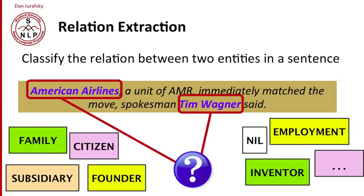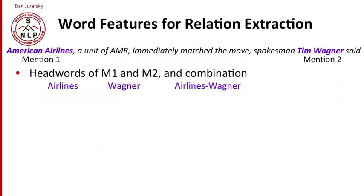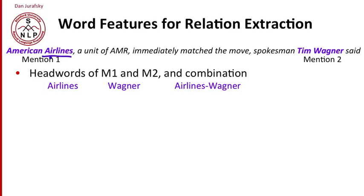What are the features we're going to use for this task? Imagine we're just deciding what the relationship is between the two entities. We have two mentions: mention one is American Airlines and mention two is Tim Wagner. One important feature is the head words of the two mentions. The head word of American Airlines is "airline" — American Airlines is a kind of airline. The head word of Tim Wagner is "Wagner." So "airlines" and "Wagner" are useful features, and we can create a new combined feature "airlines Wagner." That gives us three features so far.